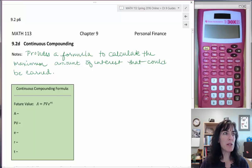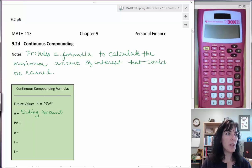So let's talk about each of those pieces. The A is that ending amount that we've used before. And the PV stands for the present value, which is also the starting amount.